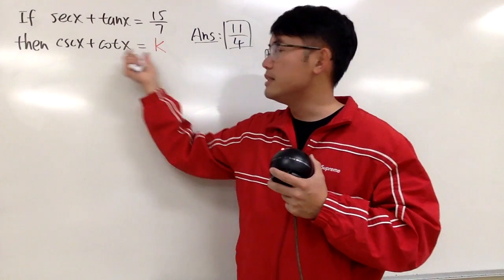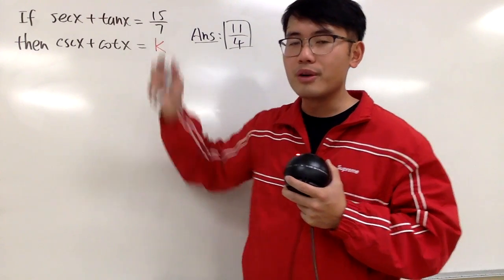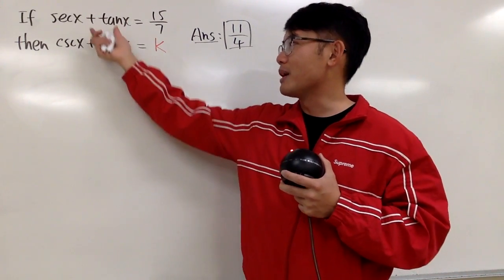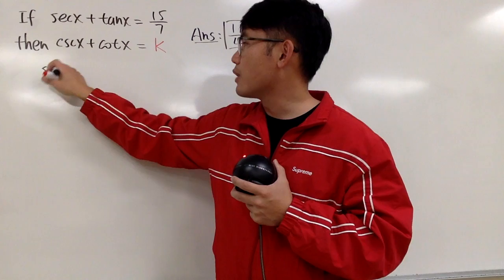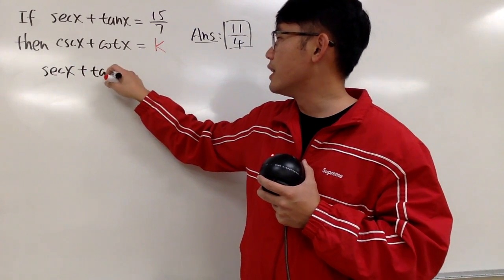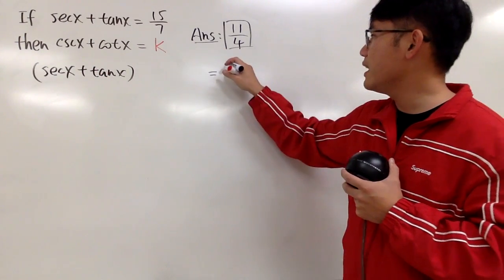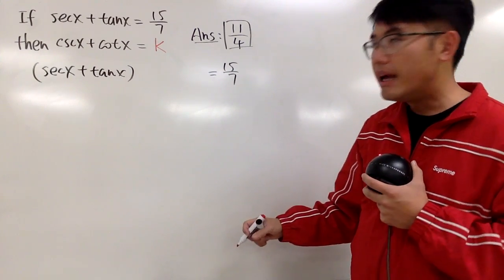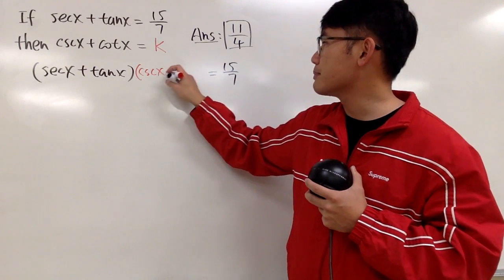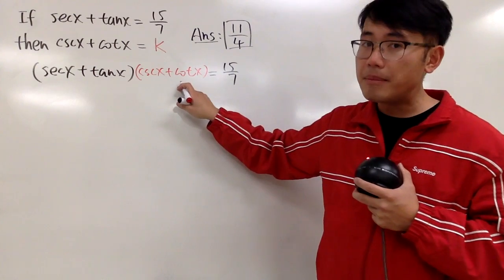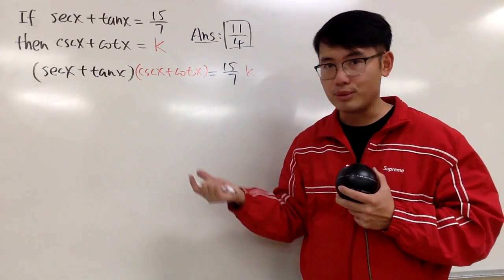And what we'll do is, because this is equal to that, and we have a given equation, I will just multiply this right here and multiply this right here. So we're just going to multiply the same thing on both sides. So let me write it down for you guys what I mean by that. So, here we start with secant x plus tangent x. So that's the left-hand side right here, and we know this is equal to 15 over 7. And then, I'm going to multiply this right here, which is cosecant x plus cotangent x. And because we know this is equal to k, I'm multiplying by k on the other side. I am still multiplying the same thing on both sides, right?